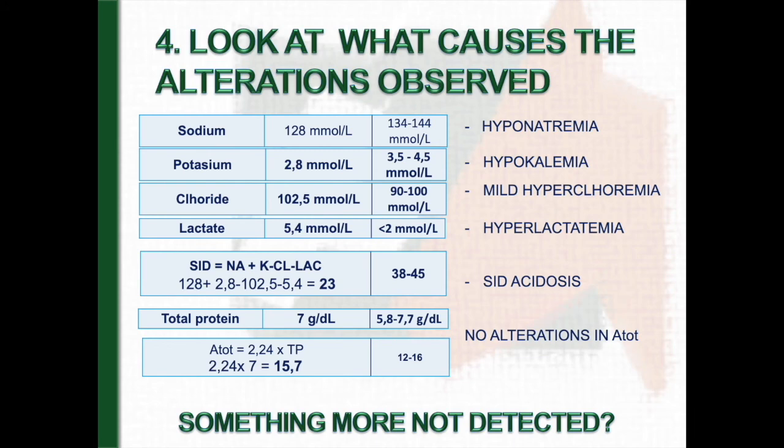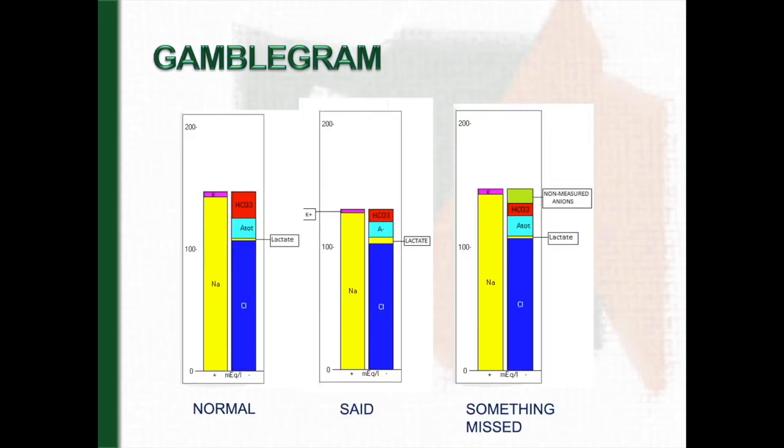Could be something more? This is the gamblegram of Said and there are no big changes between positive and negative charges. Therefore, no important alterations are present in non-measured ions.